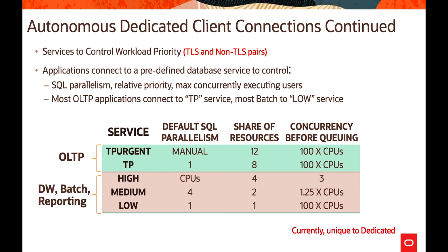The username for the service console is 'admin' in all cases, using the password specified when creating the Autonomous Database. The service name comes from the client credential wallet — when you download the credential zip, the tnsnames.ora file contains all five service names: TP Urgent, TP, High, Medium, and Low. These predefined service names provide different levels of performance and concurrency for Autonomous Transaction Processing.